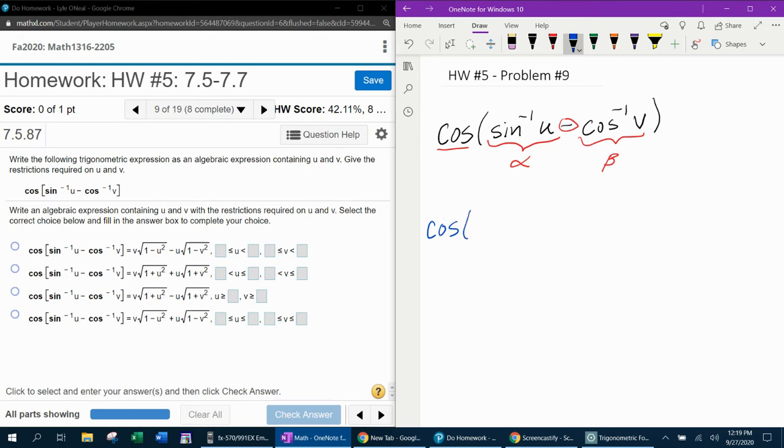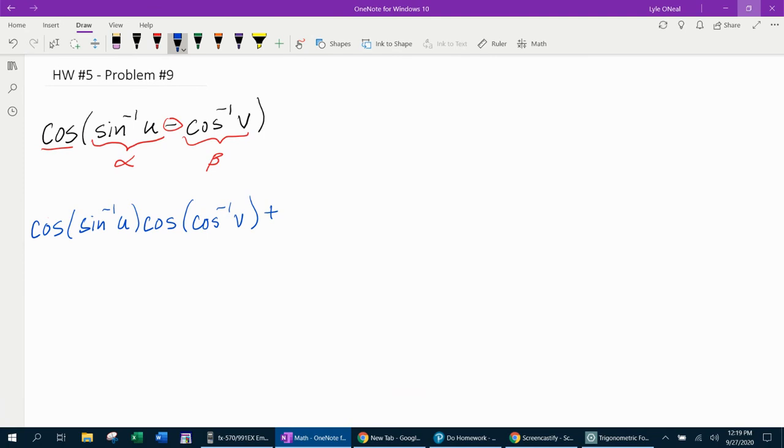Cosine alpha, cosine beta. And then remember the formula said plus, and I can see I'm going to need to make this bigger. Plus sine alpha sine beta.